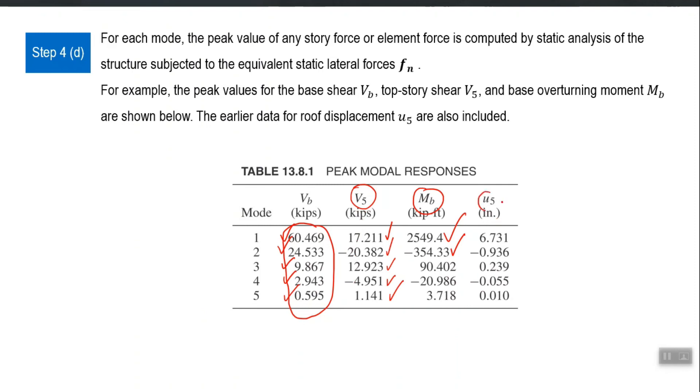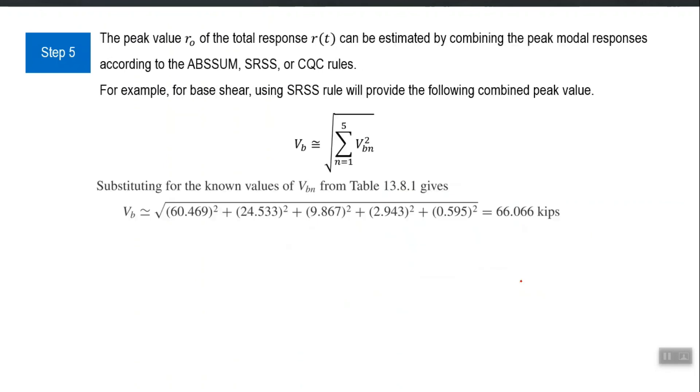Similarly, the displacement of fifth story or roof displacement, one answer will be coming from application of first mode pattern, one from second, one from third, fourth, fifth. Sometimes it will be minus, sometimes it will be plus depending upon the pattern, but SRSS will just combine them into one resultant number. So, this is step 4d: any response you are interested in, calculate for each mode and then final is to SRSS them.